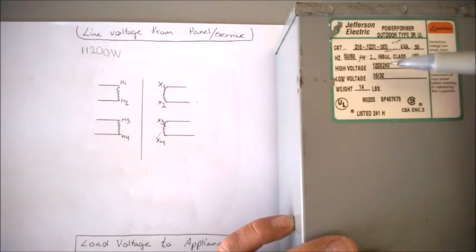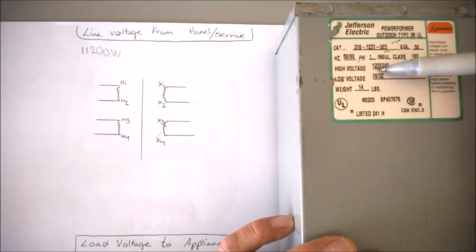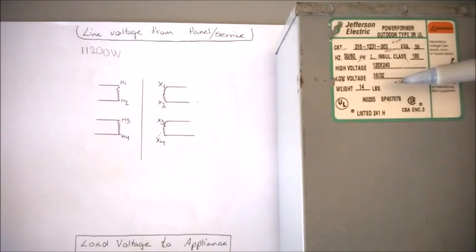Secondly down here is where you want to pay attention to—this is a 16/32, so that's what we're boosting on a 120 or 240 circuit. If we have two phases across our incoming voltage, you're going to be able to either buck or boost with 16 or 32 on this one.